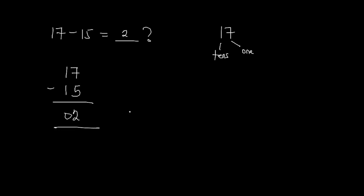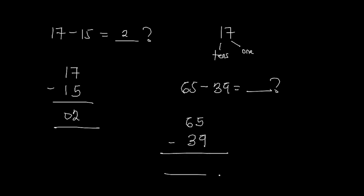Now let's have a look at another example: 65 minus 39. We write 65 with the subtraction sign and 39 below it. The first thing we do is subtract the ones, which are 5 and 9. We have 5 minus 9 — we cannot subtract 9 from 5 because 5 is smaller than 9, so we need to borrow.